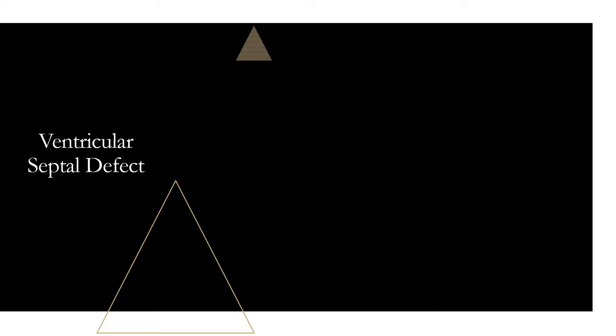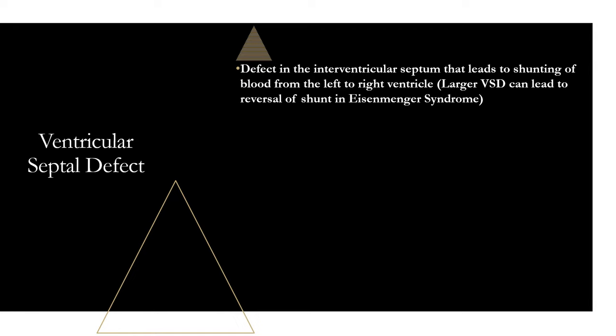Moving on to ventricular septal defect — just like atrial septal defect was a hole in the septum of the atrium, this is a hole in the ventricular septum, the bottom part of the heart. It leads to shunting and does ventricular septal defect start with a T? It does not, so it's non-cyanotic. Typically if it's larger, it can lead to reversal of the shunt and Eisenmenger syndrome.